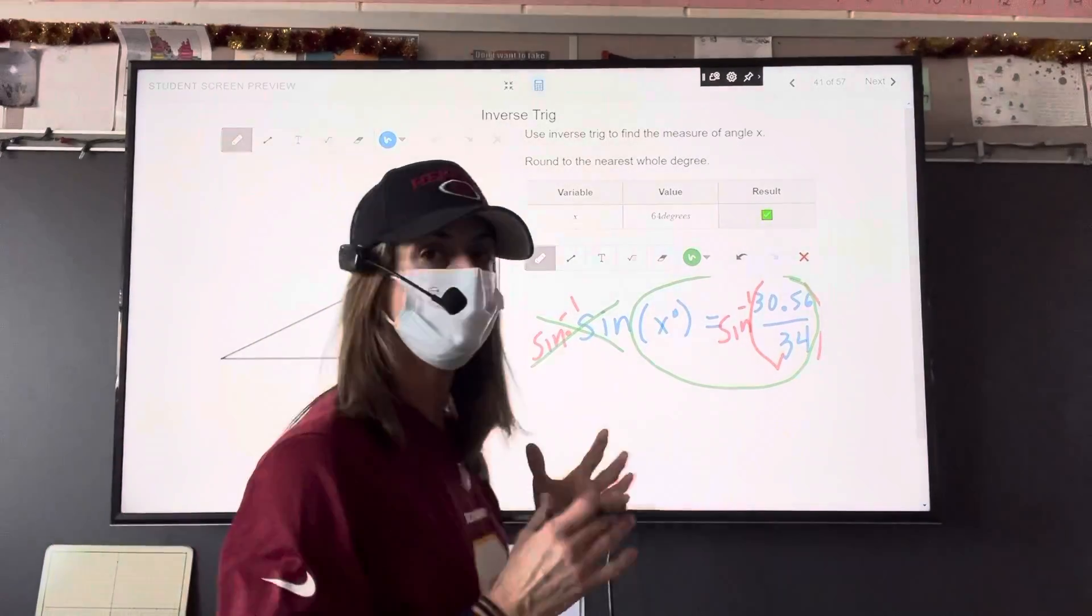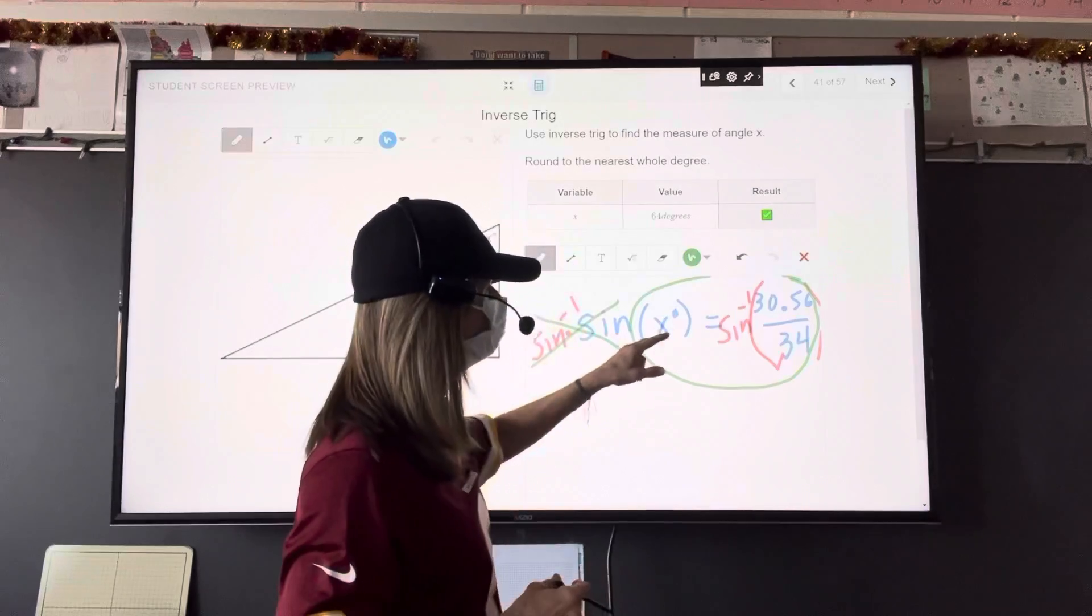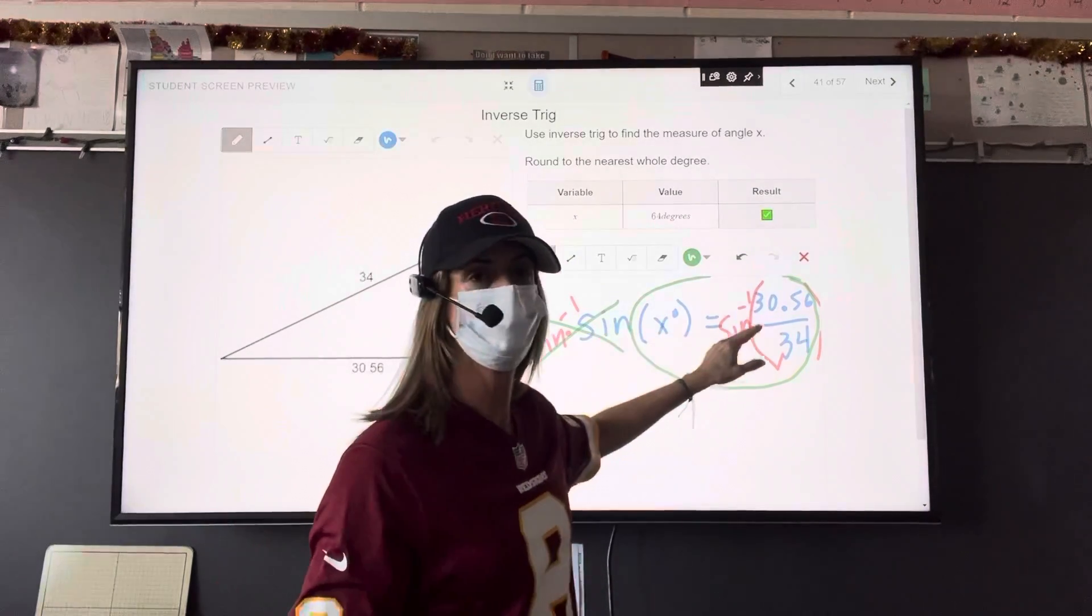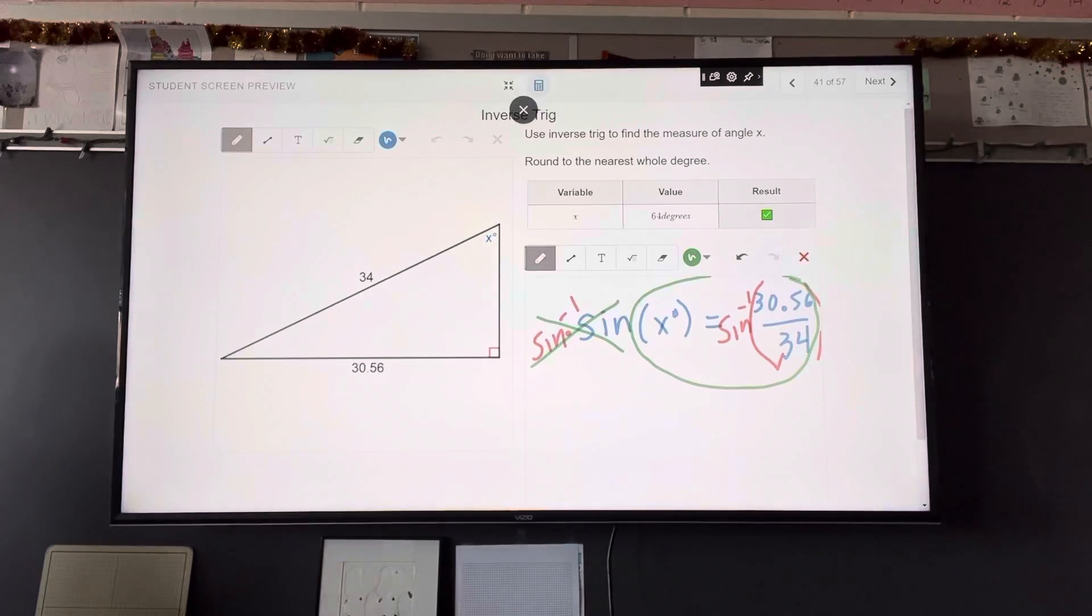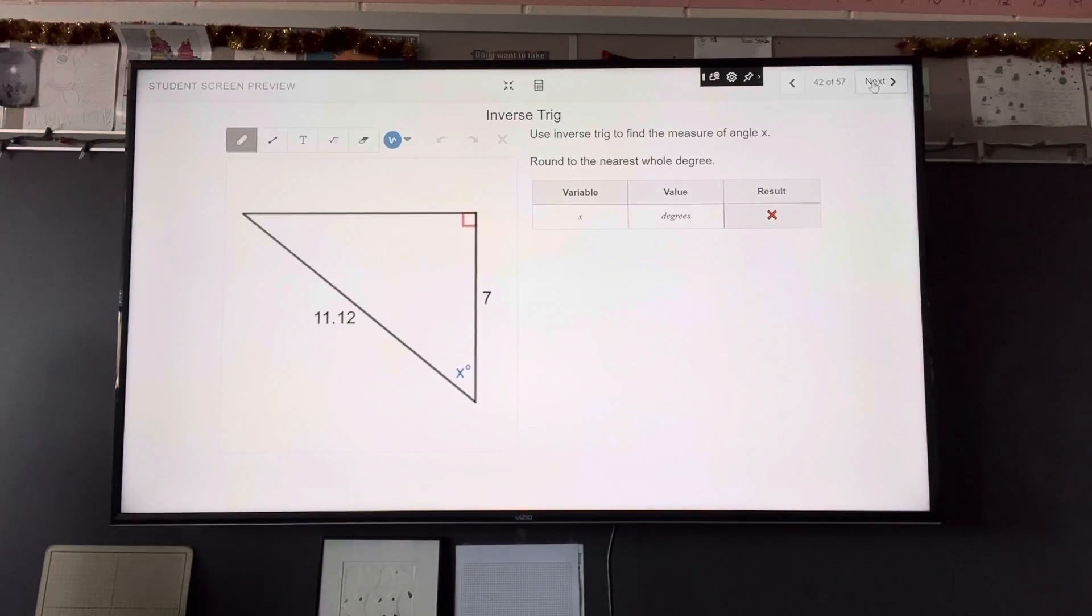So for this problem that we're doing right now, we're just going to say x equals the inverse cosine of and then adjacent over hypotenuse. If you want to see the rationale behind that, you can go back to the previous video and watch me do this problem that's on the board right now. Okay, there's not as much room to write here. That's fine. x equals, and we decided it was cosine, right? So inverse cosine of adjacent over hypotenuse.